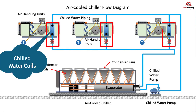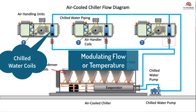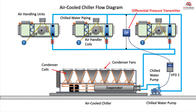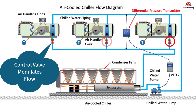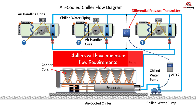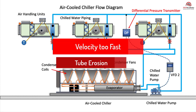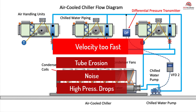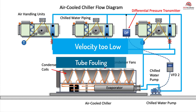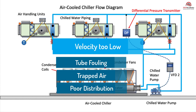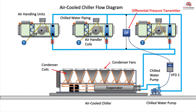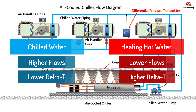Water coils control capacity by modulating the flow or the temperature of the water entering the coil. When water temperature is adjusted to track demand, flow velocity remains relatively constant. When flow is used to control capacity, the velocity through the tubes changes as the control valve modulates. Some coil manufacturers suggest velocities from 1 to 12 feet per second. When water velocities are too high, there can be tube erosion, noise, and high pressure drops. If velocities are too low, there could be tube fouling, air trapped in the coil, poor water distribution, and risk of freezing. Less water typically flows in a heating hot water coil compared to a chilled water coil, due to the higher delta T temperatures used in heating systems, which allow for lower flow volumes.